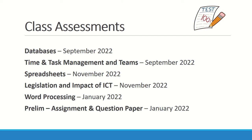Throughout the year pupils will be sitting regular class assessments after they finish each unit of work. The databases assessment and the time and task management and teams theory assessment were both sat in September. The next assessment will be spreadsheets, at some point during November, along with legislation and the impact of ICT theory. After Christmas we'll normally set a word processing assessment, and then prelims should take place towards the end of January or beginning of February, where pupils will sit a full assignment and question paper to get a feel for the final exam.